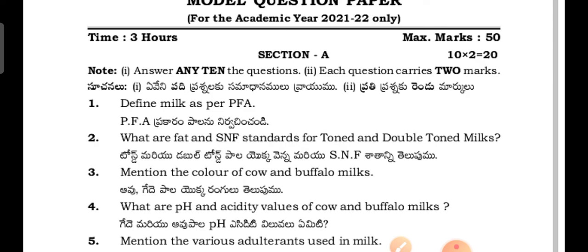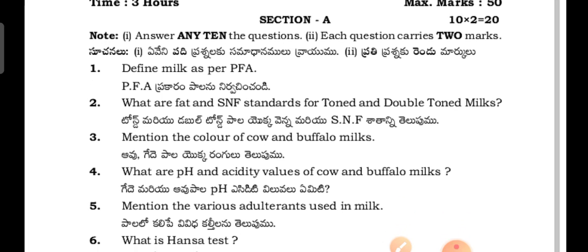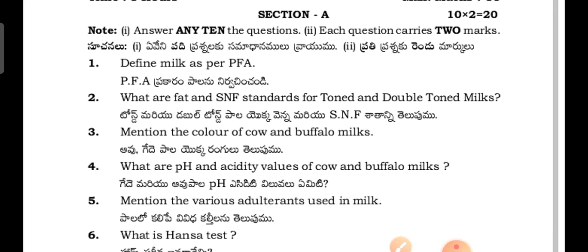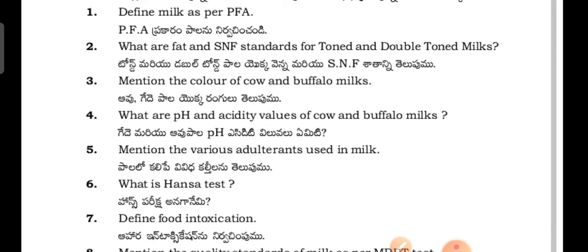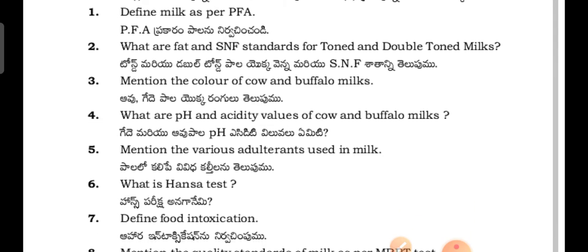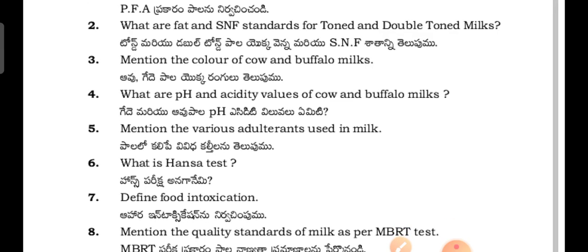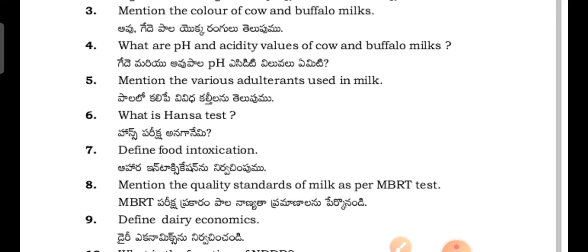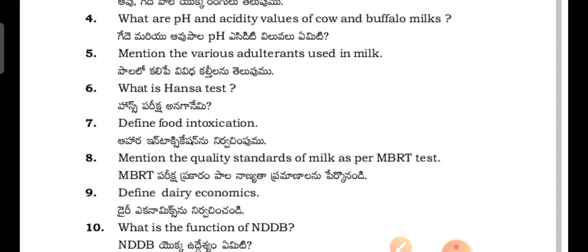This is the Milk Quality Extension and Entrepreneurship model question paper for 2021-22 students only. The reason I mention this is these students have more choice. The remaining questions are the same. Section A: Define milk as per PFA. PFA - mention the fat and SNF standards for toned and double toned milks. What is the color of cow and buffalo milk? What are the pH and acidity values of cow and buffalo milk?